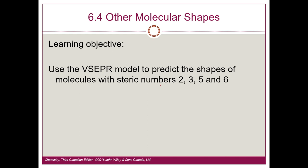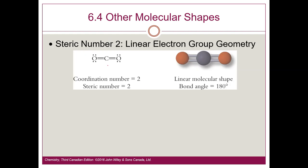The steric numbers we really care about in this course are 2, 3, 4, 5, and 6. There are only one or two cases with 7 and we don't worry about those. VSEPR applies to covalent molecules with at least three atoms — triatomics and higher. If you just have two atoms like hydrogen fluoride, you know it's linear without needing any VSEPR analysis. But if there are three atoms, it could be linear or bent.